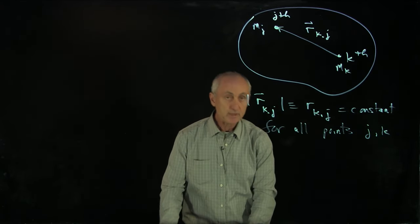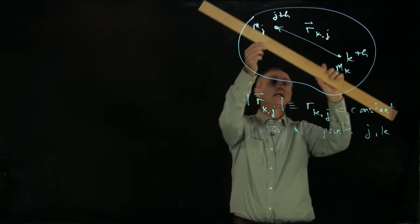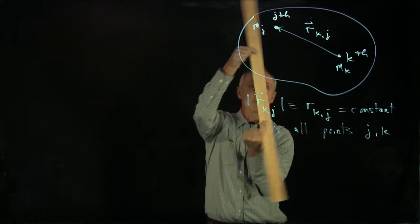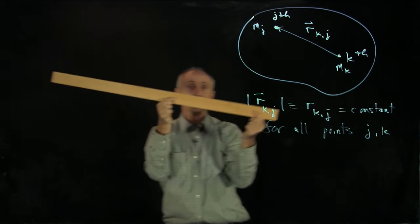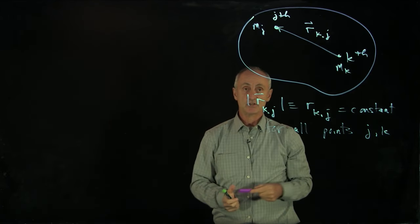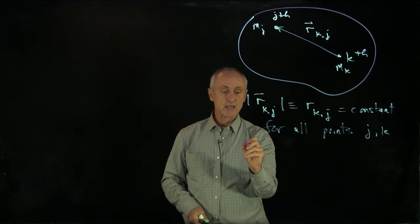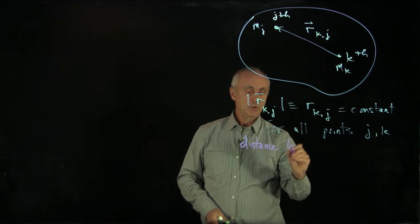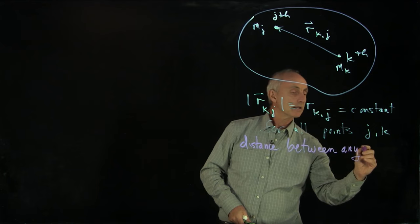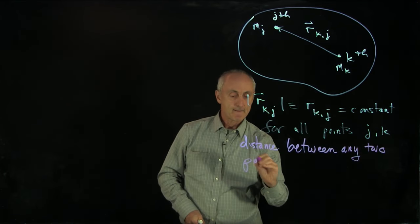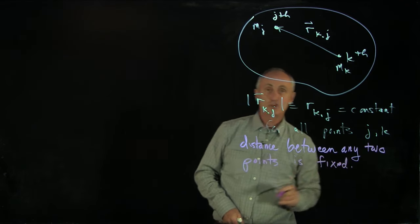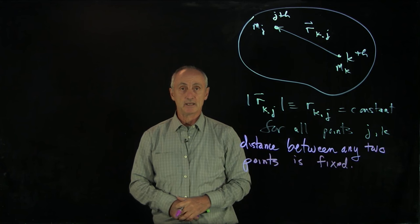Now, what does that mean? That means the distance between any two points in the rigid body stays fixed, no matter how the rigid body is moving, and no matter what two points I choose. The distance between any two points is fixed. So that doesn't change. And that's what we call the rigid body condition.